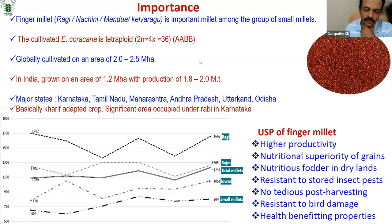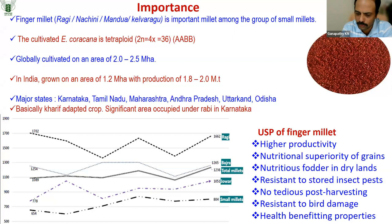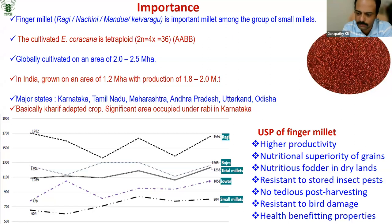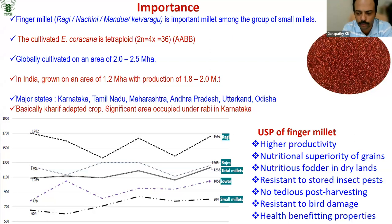Farmers grow finger millet mainly for the grain, but the stover — the fodder from ragi — is equally important and farmers give equal importance to both grain and fodder. Compared to other cereals, it has very few storage insect pests and can reportedly be stored for up to 50 years, making it important food during famine. Unlike other millets, ragi is a naked grain — it can directly be made into flour and consumed in various forms. Compared to sorghum, there is not much bird damage in finger millet.